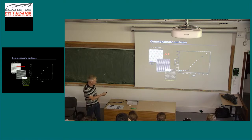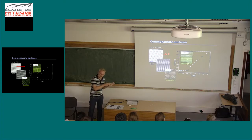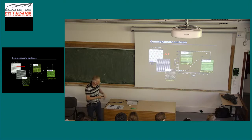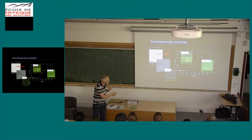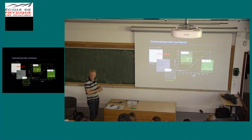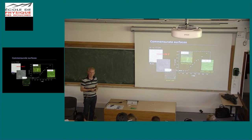At the depinning transition there is strongly nonlinear behavior — interestingly, part of the particles move and another part does not. Only for even larger pulling forces — about 150 femtonewtons, which in our case is large — do all trajectories move in the direction of the pulling force. Interestingly, looking at the particle distribution in the co-moving frame, it looks like an undistorted colloidal crystal — this is a totally sliding state. The more you pull, the less important the corrugation of your substrate.